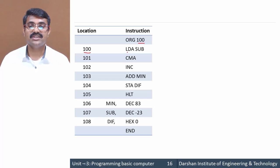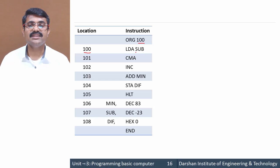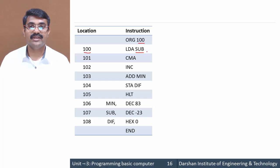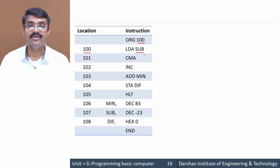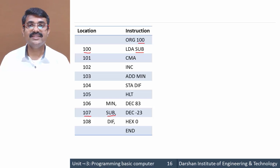The first instruction is LDA SUB. SUB is a symbol that represents some memory location, because the LDA instruction must have an operand. Instead of remembering the actual address 107, we write SUB. So SUB is the symbol for address 107.